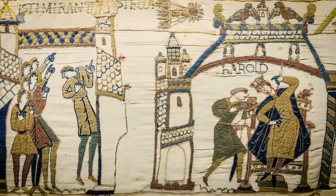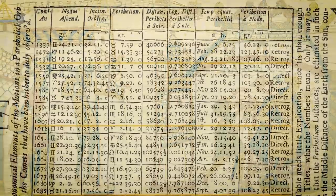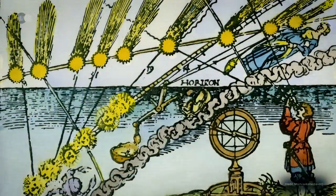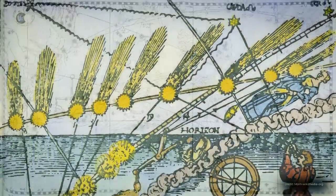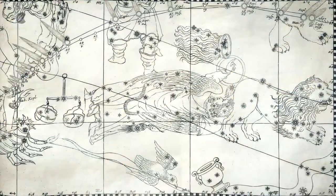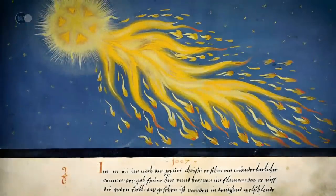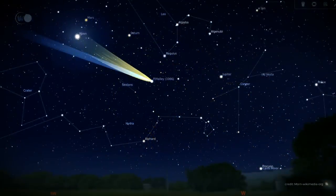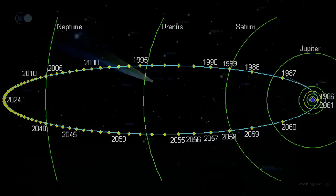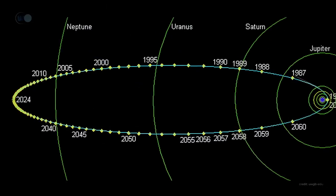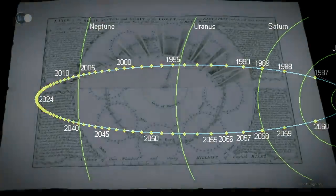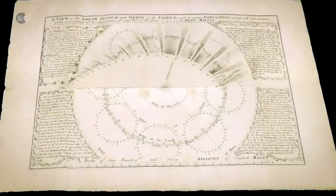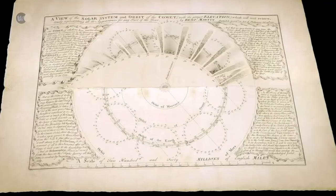In 1705, Edmund Halley published a book suggesting that all these successive comets, observed in 1531, 1607, and 1682, were in fact a single comet. He then predicted that it would again be observable in our planetary environment every 76 years. Sixteen years after his death, in 1758, Halley's Comet kept its appointment.